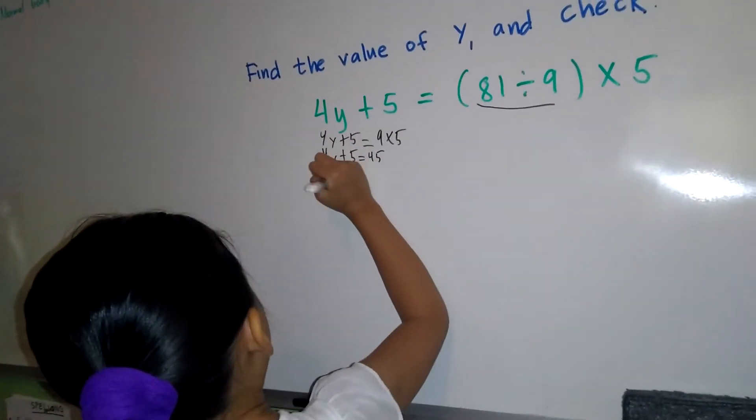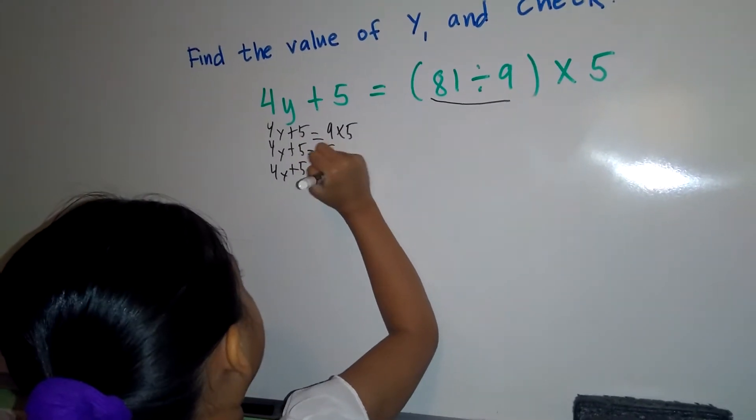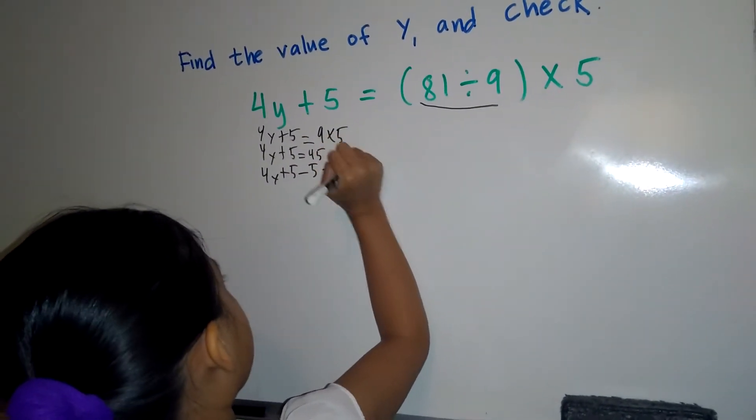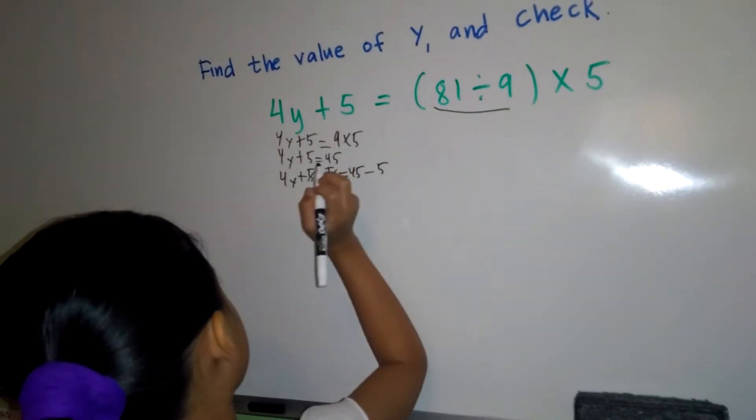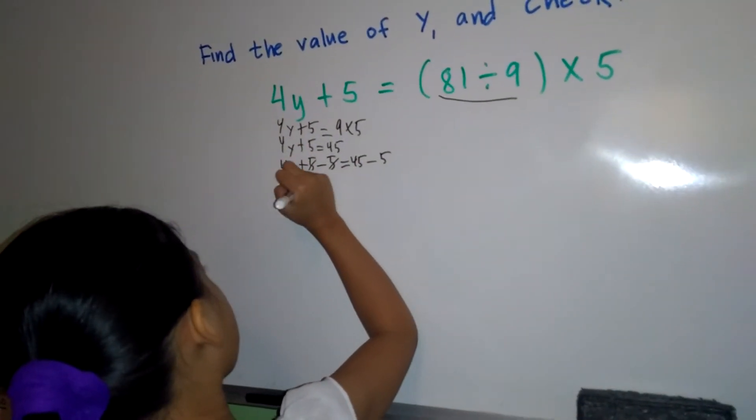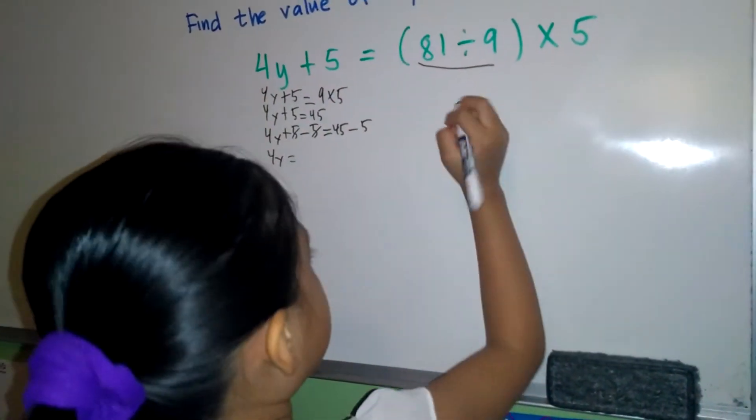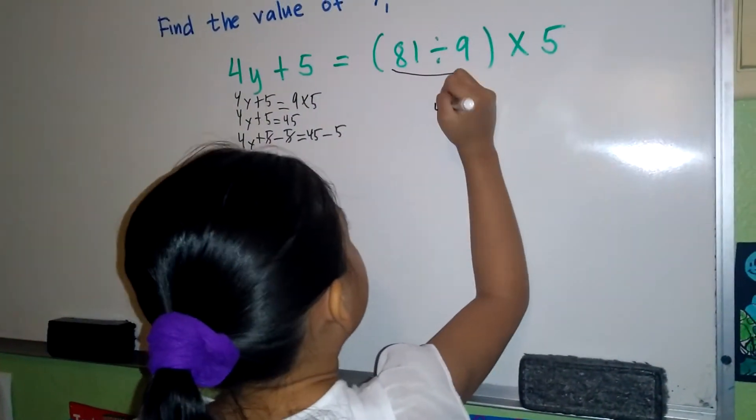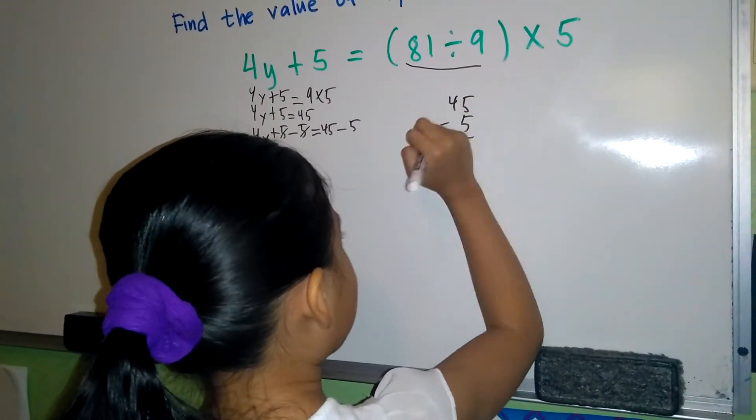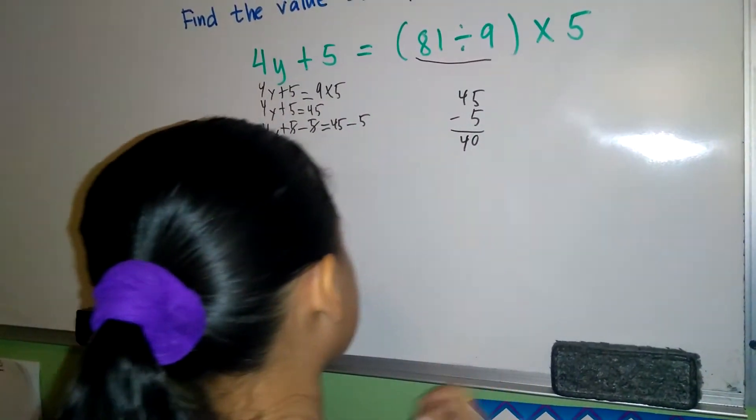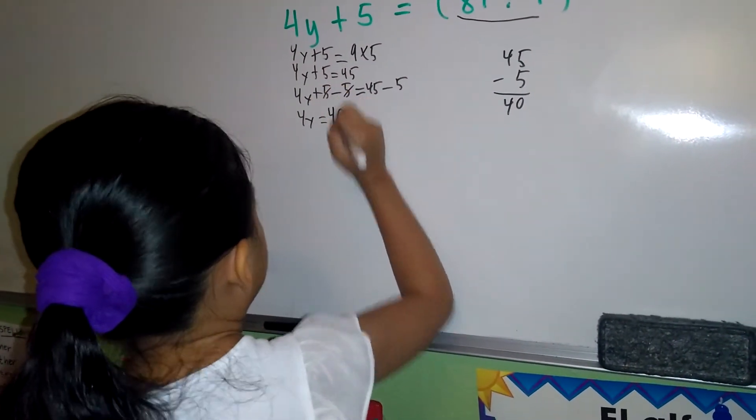4y plus 5 minus 5 equals 45 minus 5. 5 minus 5 equals 0, so 4y is left. 4y equals 40.